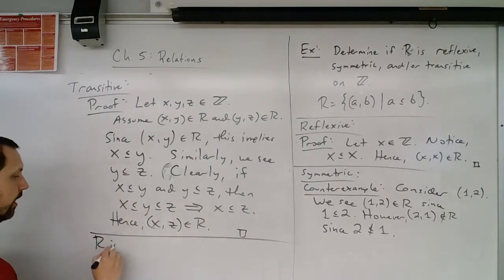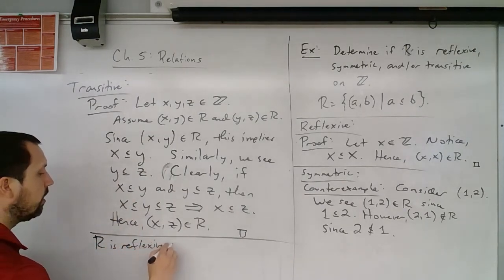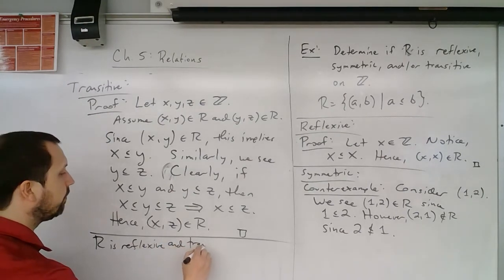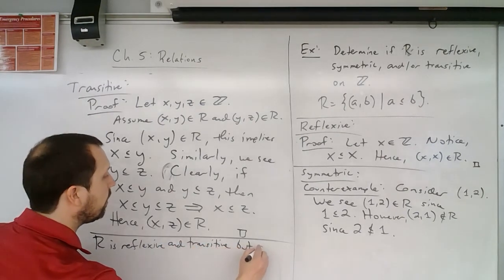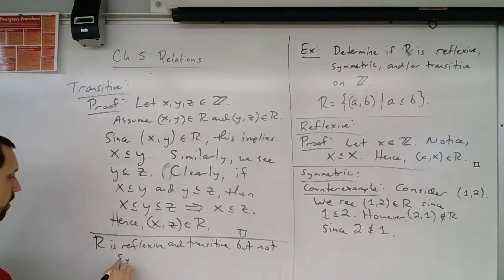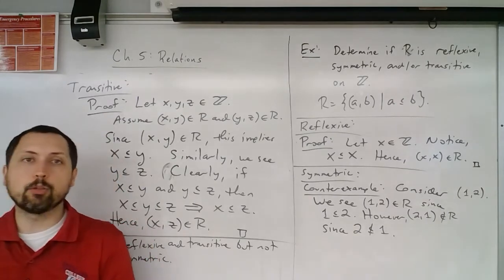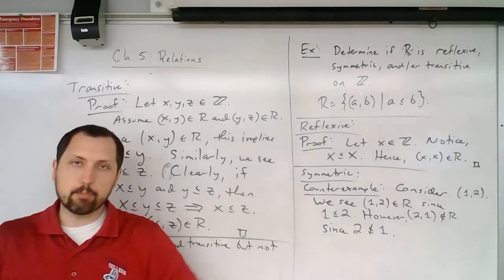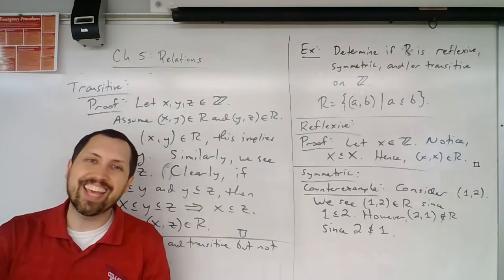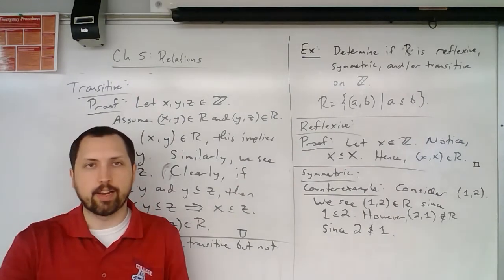So we can conclude that R is reflexive and transitive, but not symmetric. These are examples of proof techniques and counterexample techniques used to determine whether a relation is or isn't reflexive, symmetric, and transitive.